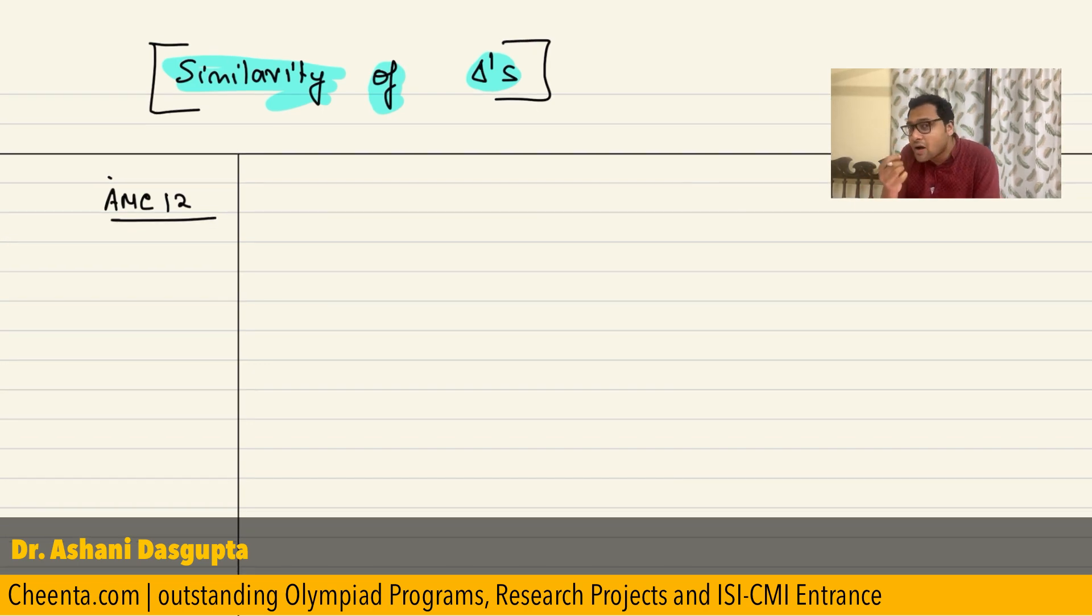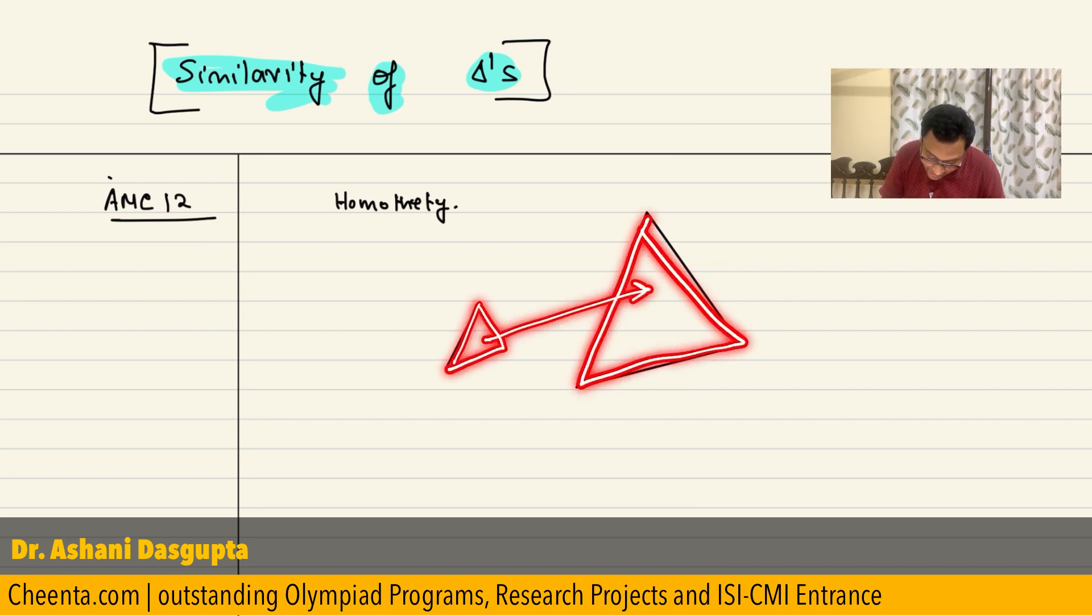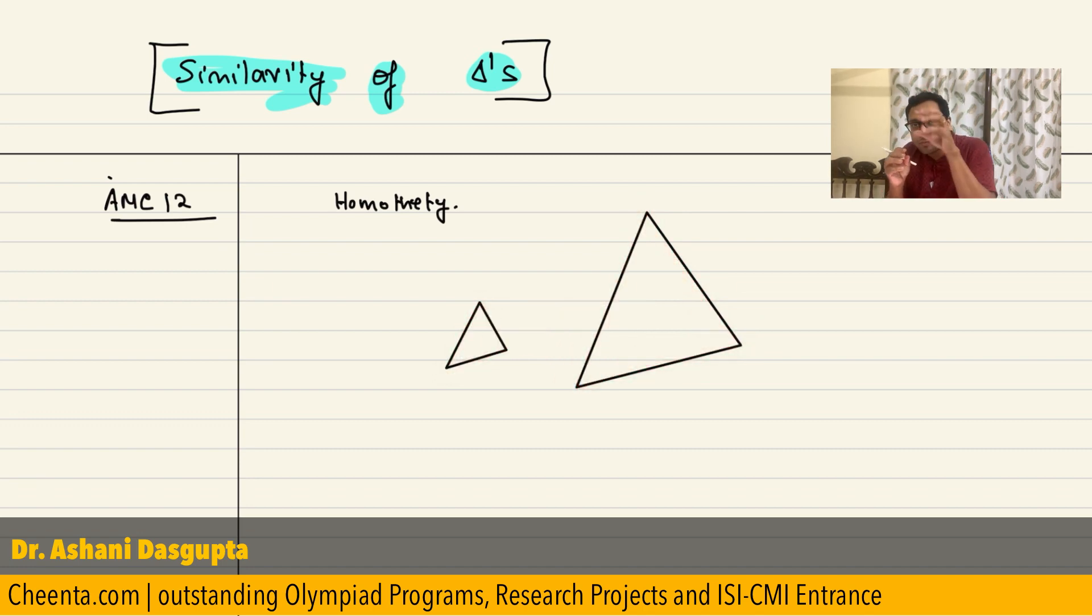Let's come back to this. You know how to think about similarity. I always say this to my students: think about similarity using homothety. What this essentially means is, suppose if you have two triangles which are similar to each other, you can imagine that this triangle is blown up to this triangle.